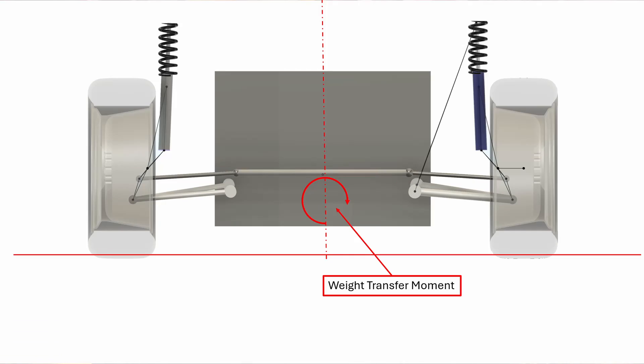As the weight transfer loads up the outside tires, there are two paths it can follow. It can travel along the suspension links, or it can travel through the spring. And one of the effects of roll center height is to control how much of the weight transfer goes through the suspension and how much goes through the spring.